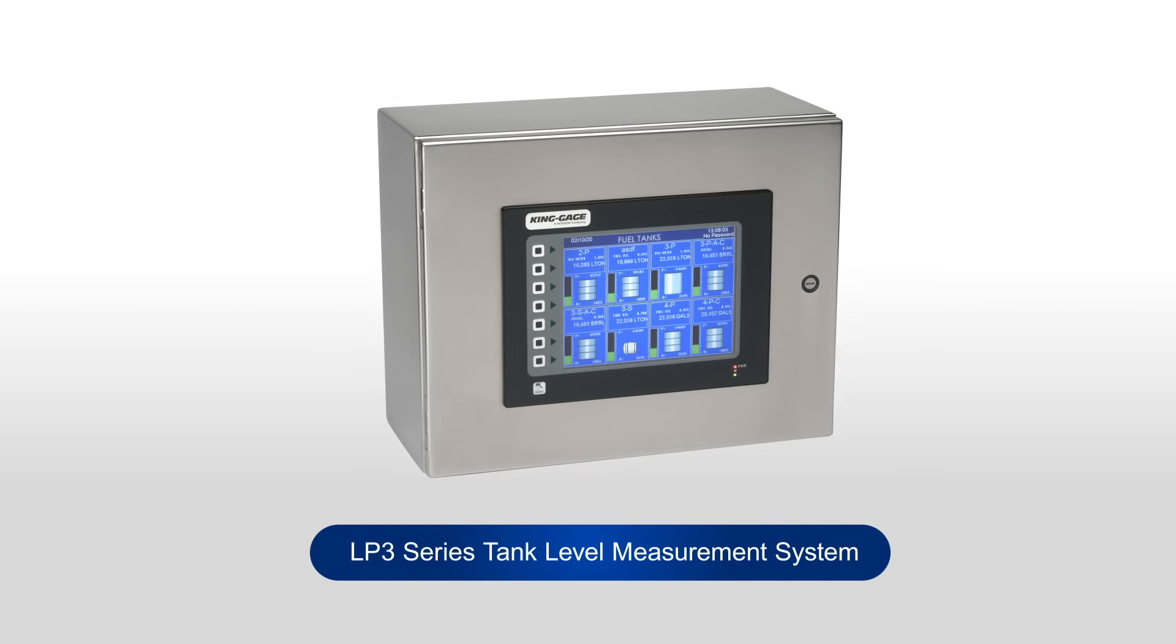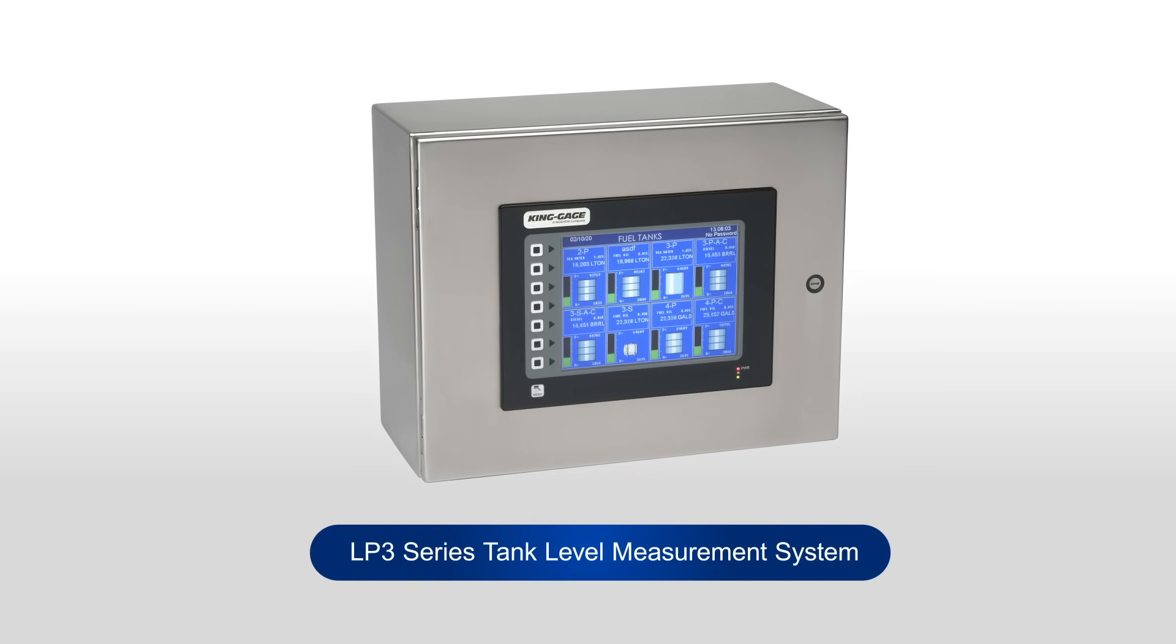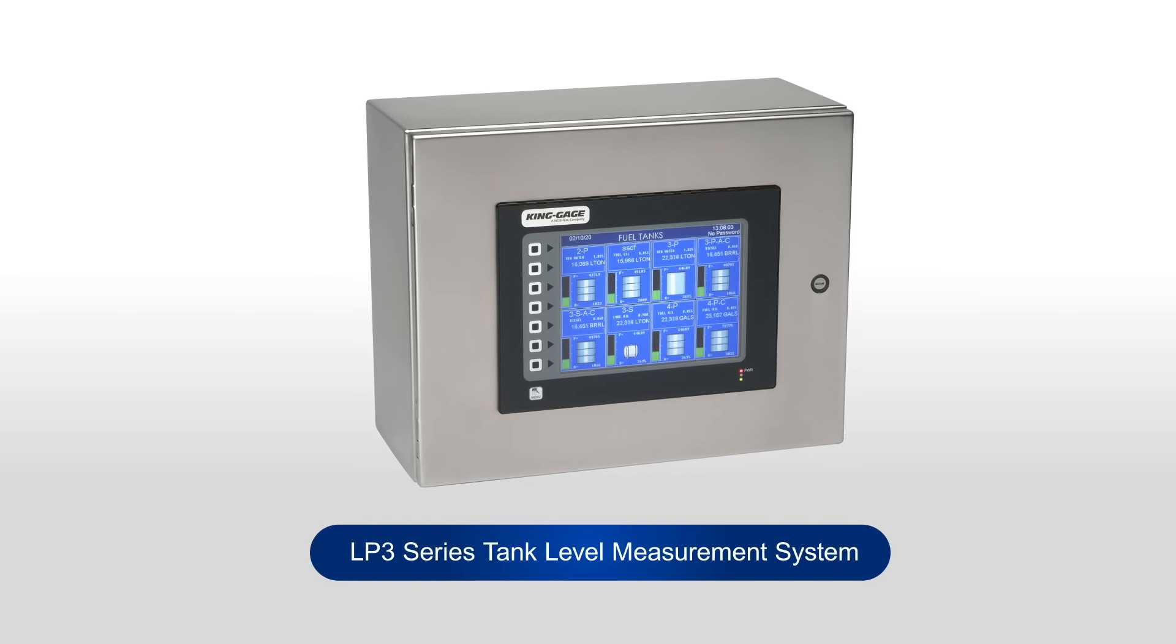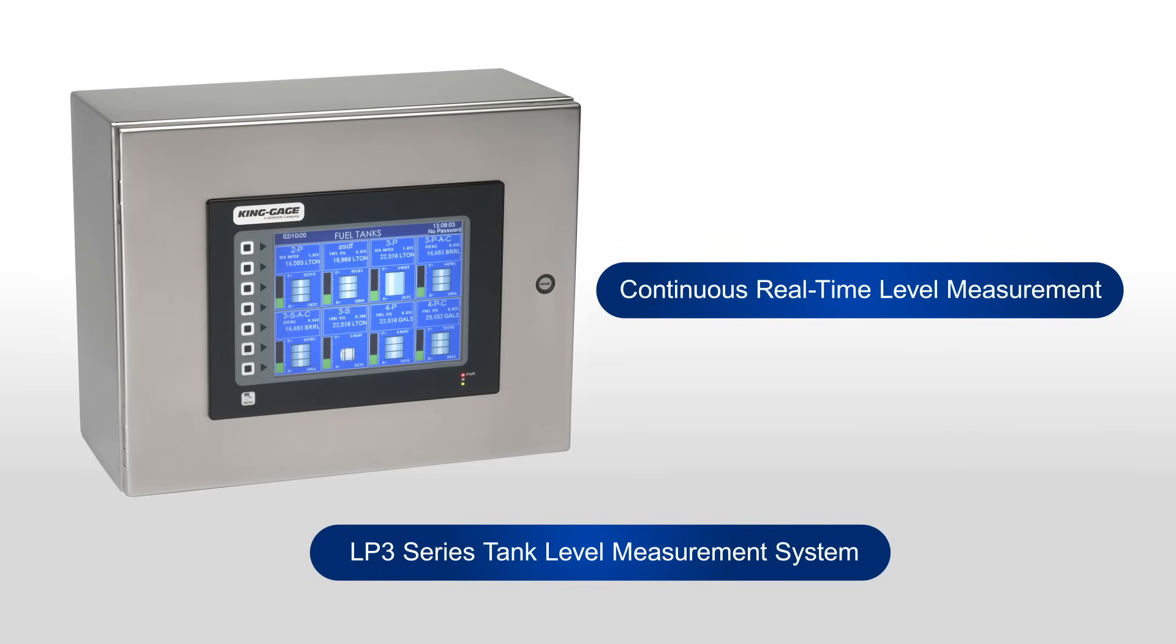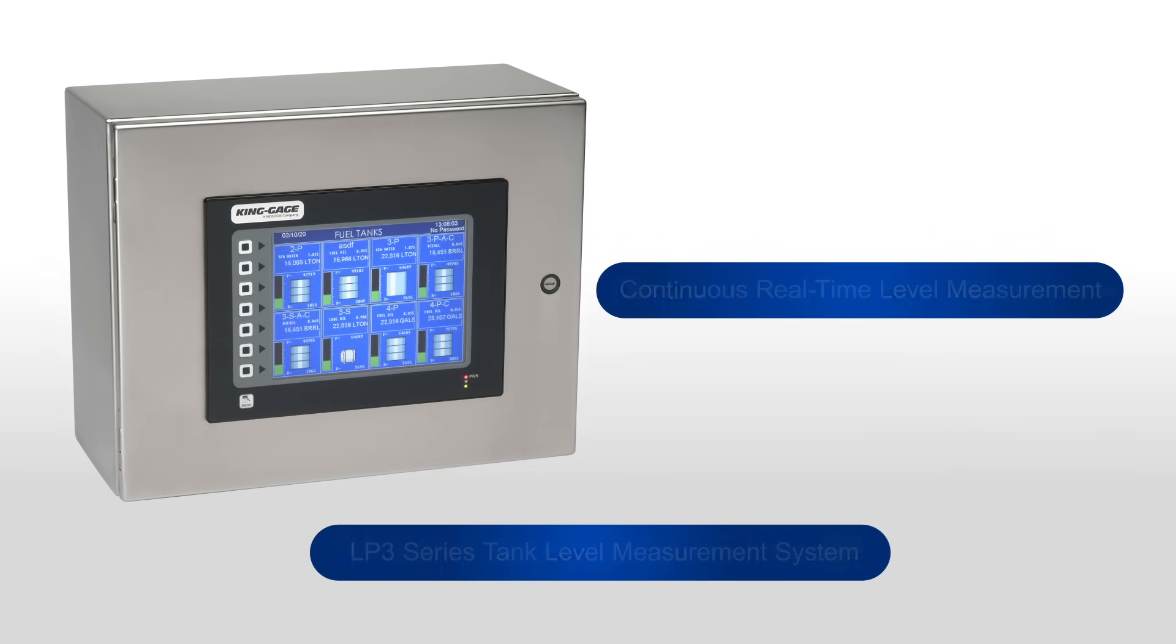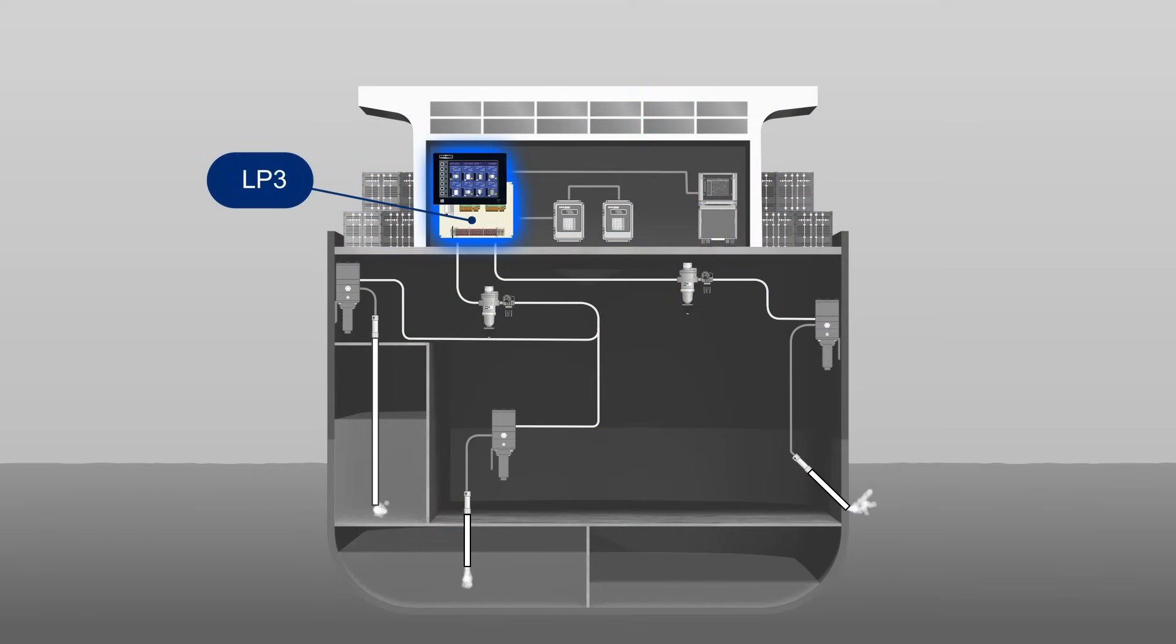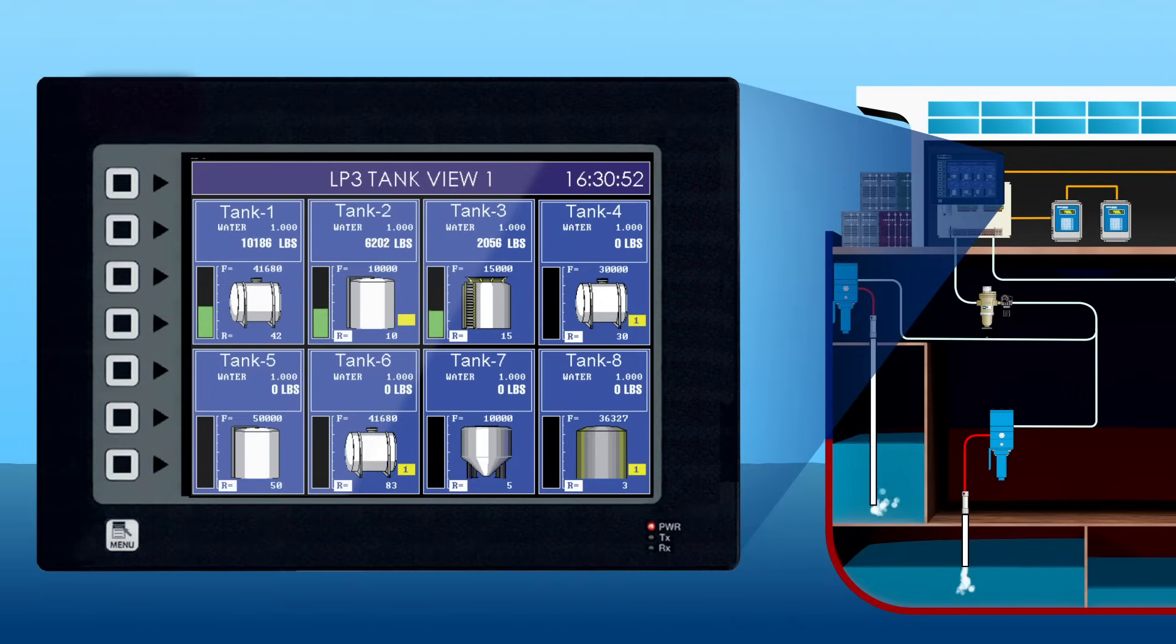King Gauge offers multiple electronic process indicators, including the LP3 series tank level measurement system, which provides continuous real-time level measurement in service or ballast tanks and vessel draft. Tanks are graphically displayed on the screen and include a simple bar graph icon to convey tank level status at a glance.